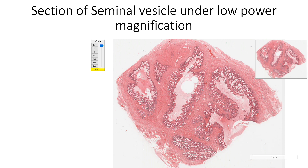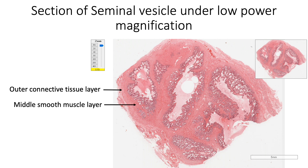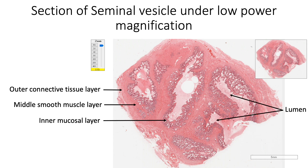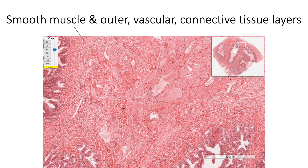Seminal vesicles are highly coiled tubular glands containing an outer connective tissue layer, a middle smooth muscle layer, and an inner mucosal layer around the lumen. Smooth muscle fibers are arranged as a circular layer, and the outer connective tissue has blood vessels in it.